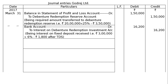Next entry: Bank account debited to interest on debenture redemption investment account. Being interest on fixed deposit received — that is Rs 3,00,000 at the rate of 6%, which is Rs 18,000, minus TDS of Rs 1,800, giving a net of Rs 16,200.